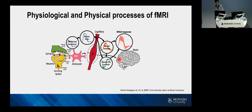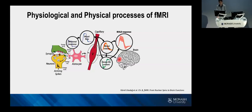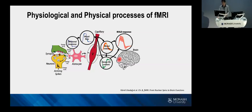fMRI is a very mature technique. Let's have a quick review of the physiological and physical process of fMRI. When neural activity happens, the hemodynamic response allows more blood flow delivered to the surrounding area. This increases the concentration of oxyhemoglobin in this region, and at the same time deoxyhemoglobin is reduced because of oversupplied oxygen. The ratio change between these two hemoglobins leads to distortion in the magnetic field, which can be captured by the MRI scanner to generate the MR signal.